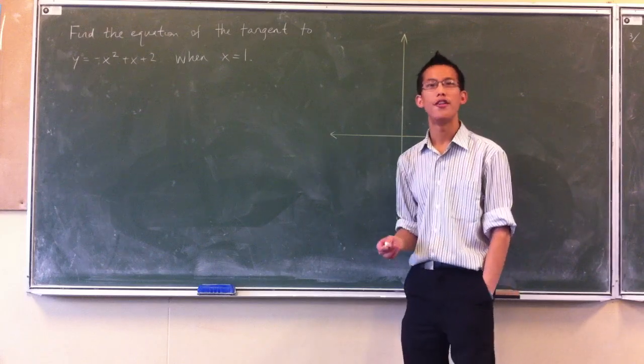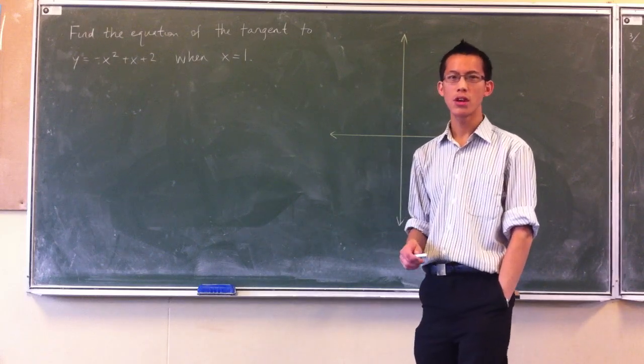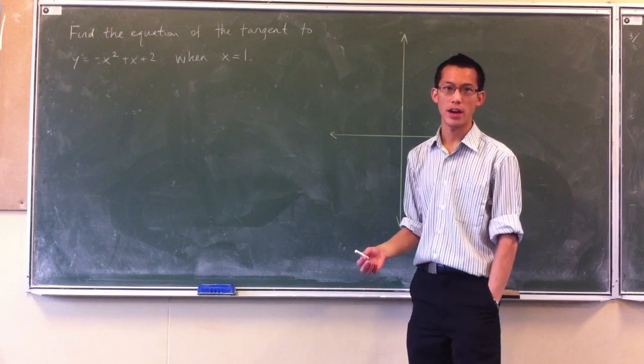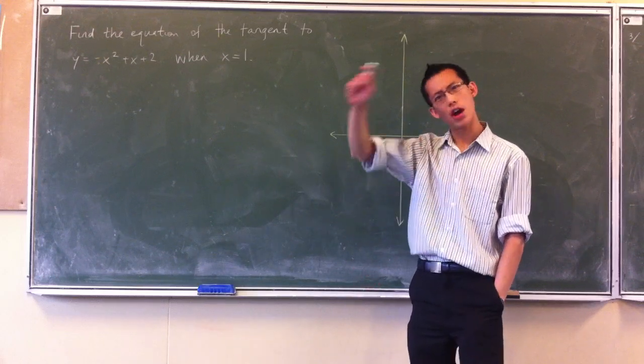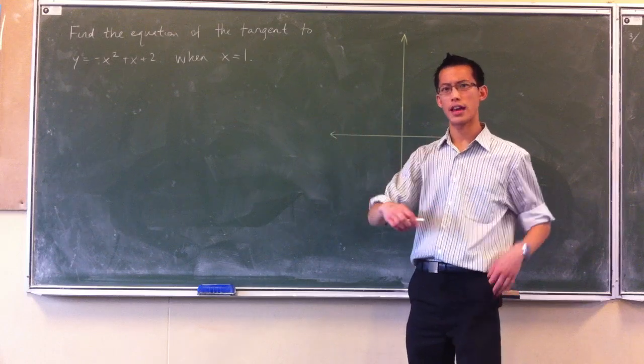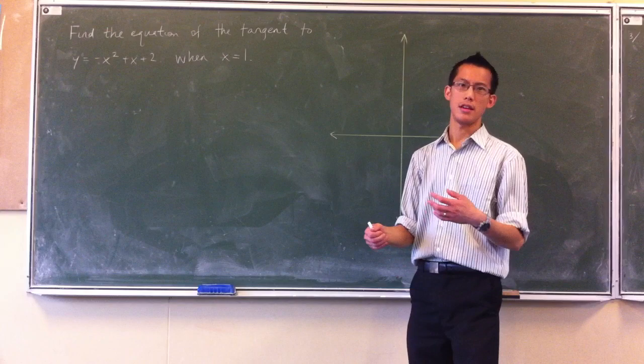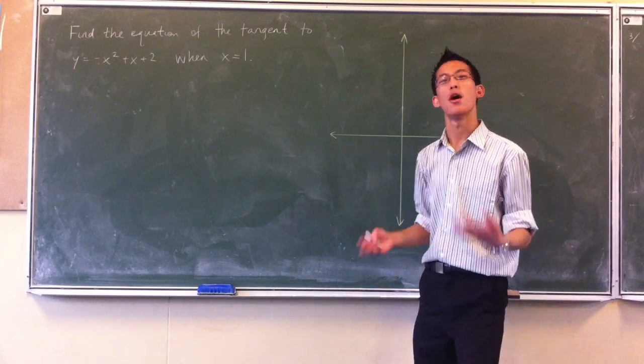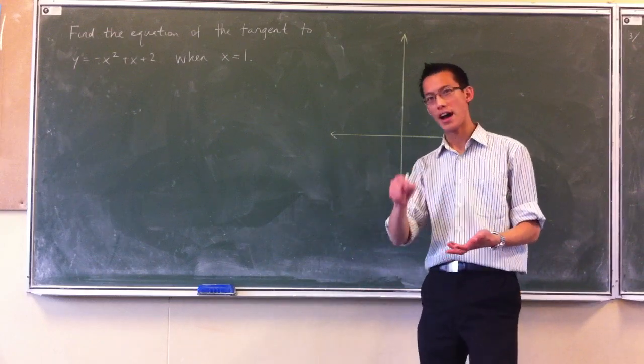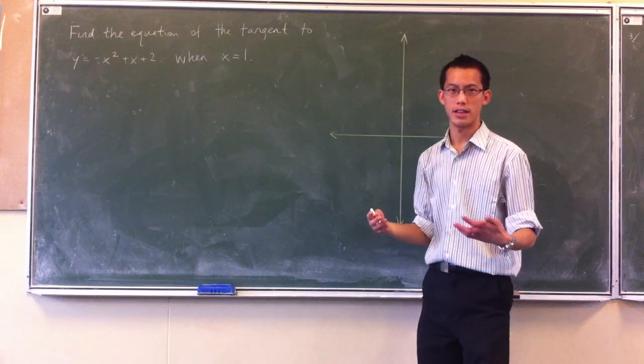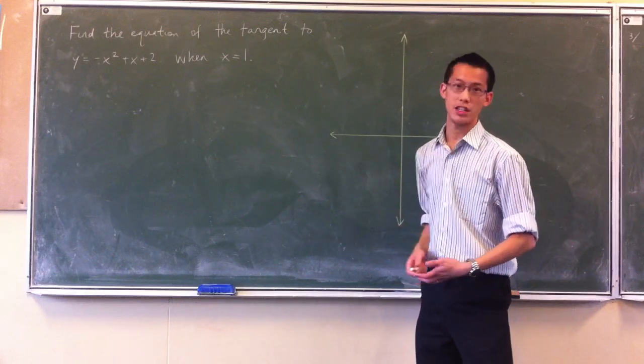In calculus, one of the first things that you learn to do with the derivative of a function is to find the tangent of an equation where the equation is curved. Because if the actual graph that you're going to draw is curved, the gradient is always changing, and so this is a perfect use of the derivative to find the gradient at a particular point and use that to find the equation of a tangent. So here's a pretty typical question.